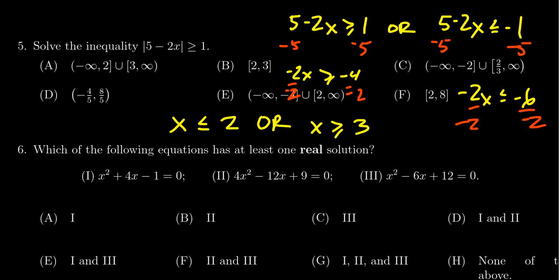-6 divided by -2 is a positive 3. So we want x is less than 2, or x is greater than 3. The first inequality here does become an interval, negative infinity to 2, inclusive, because we're allowed equal to 2.